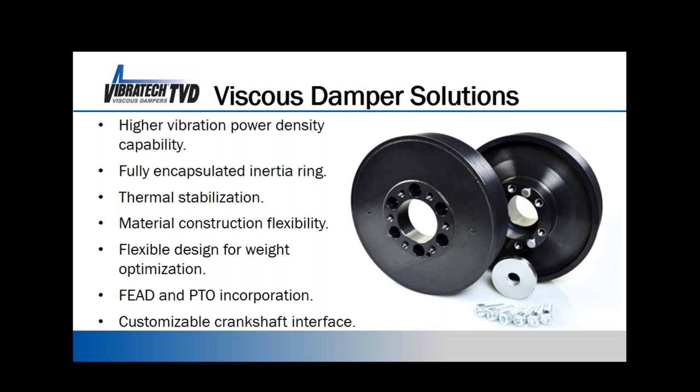Material construction for damper housings and inertia rings is flexible to suit customer needs. For lightweight dampers, we focus on the outer housing — the hub mass that attaches to the crankshaft — making it as light as possible while keeping the internal ring doing the work. A lightweight housing on a larger diameter gets more vibration benefit from a smaller total mass. This can be achieved through creative mill work on steel or by using aluminum, which also provides thermal advantages.